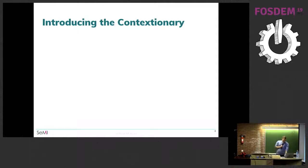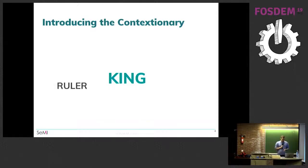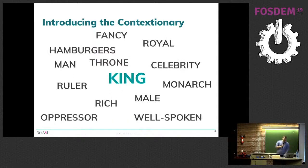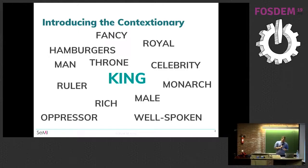The contextionary is an AI-based natural language tool that helps add context to words. It's best explained with an example: think of the word 'king.' Associations might include ruler, monarch, man, male, fancy, royal, could be an oppressor, could be well-spoken — and depending on how hungry you are this morning, could also be hamburgers. If we take the word 'king' in a vector space, seeing it as the sum of all these words that make up the context, we can perform basic mathematical operations on it.